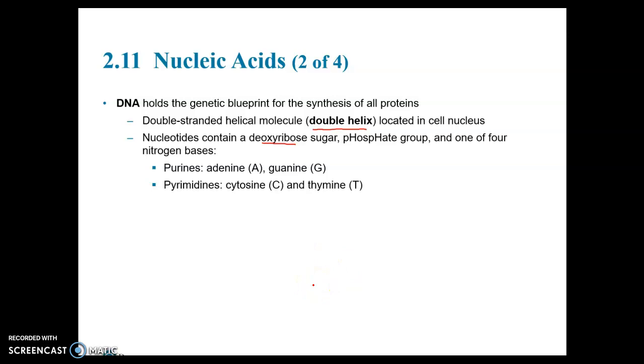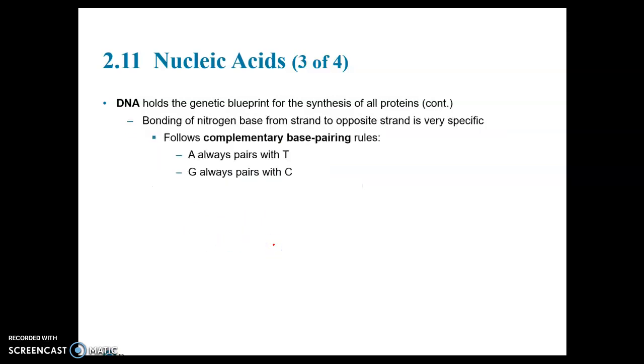Either adenine, or guanine, or cytosine, or thymine. Adenine and guanine are called purines because they are double ring structures, and cytosine and thymine are called pyrimidines because they are single ring structures. In the two strands of DNA, if there's an A on one strand, then right beside it, paired with it, is going to be a T. And G is always going to pair with C. We call this complementary base pairing.